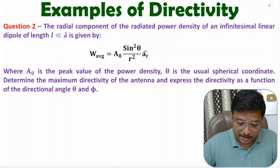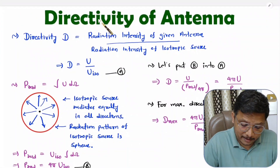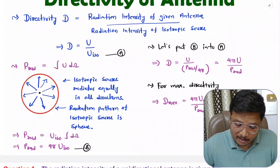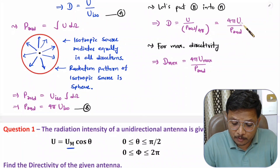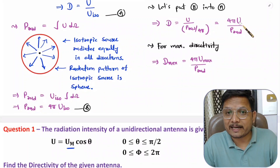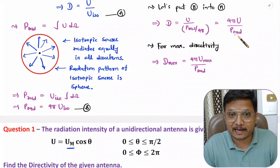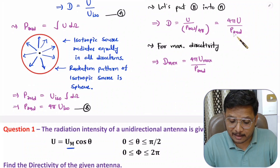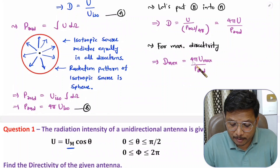In my last video, I have explained directivity of antenna. I derived the equation of directivity as 4π·u divided by P_rad, where u is radiation intensity of antenna and P_rad is the radiated power. Based on that, I explained calculation of maximum directivity as 4π·u_max divided by radiated power.